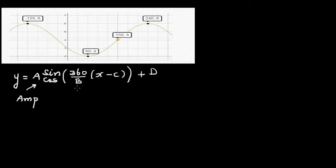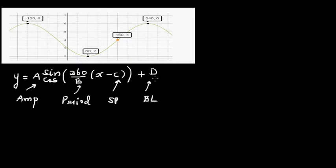In this formula, A gives you the amplitude, B is the period, C is the starting point, and D is the baseline. So if you can figure out A, B, C, and D, you can write the equation as a sine or cosine graph.